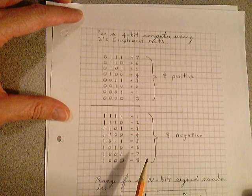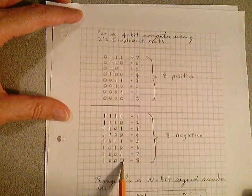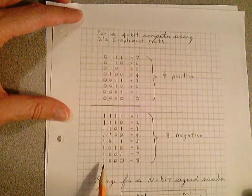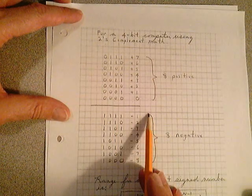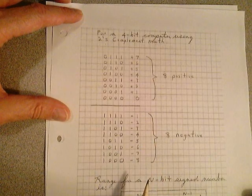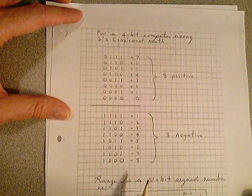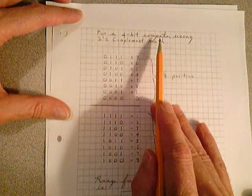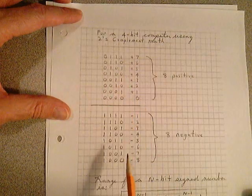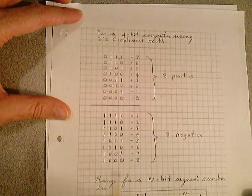And then these bottom digits start at 000 through 111 with the sign bit being 1. There are 8 negative numbers. So for a 4-bit binary number using 2's complement math, this is the range from minus 8 up to plus 7.